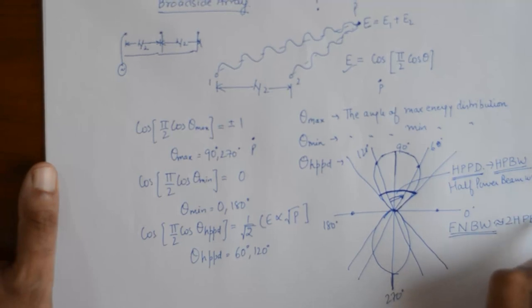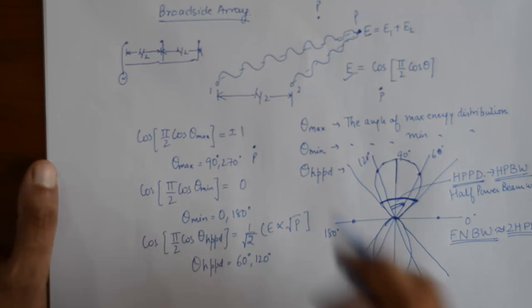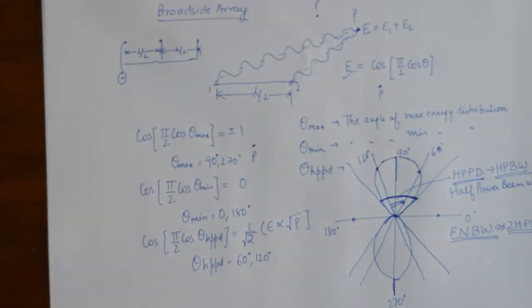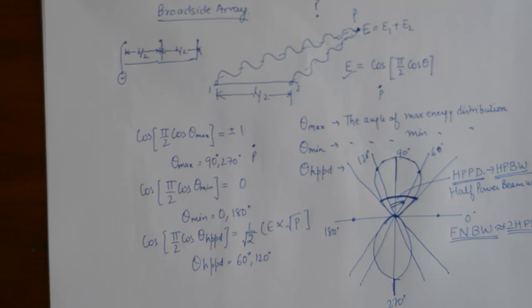That is how we draw the fundamental radiation pattern of a broadside array. We begin with two elements and calculate the power received at a distant point P, arriving at a normalized formula as a function of theta — the angle at which point P is located. From there we find the point of maximum reception, minimum reception, and half-power reception, and thus draw a three-dimensional radiation pattern. Thank you for watching — have a good day and a good life, bye.